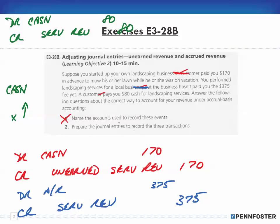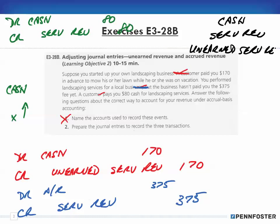Now going back to name the accounts used to record these events: you're using Cash, Service Revenue, Unearned Service Revenue, and Accounts Receivable. Those are the different accounts used across these three transactions. That's it for Exercise 3-28B.